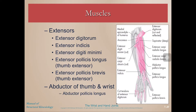Then we have a whole range of extensors: extensor digitorum, which extends all of the digits; extensor indices, which extends just your pointer or index finger; extensor digiti minimi, which is your pinky finger extensor; extensor pollicis longus for your thumb; extensor pollicis brevis — another thumb extensor, longus versus brevis meaning long versus short; and abductor pollicis longus.